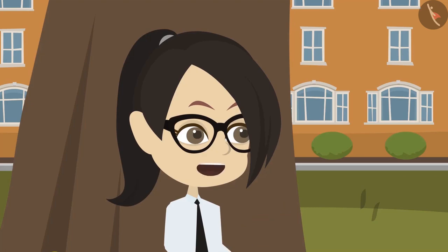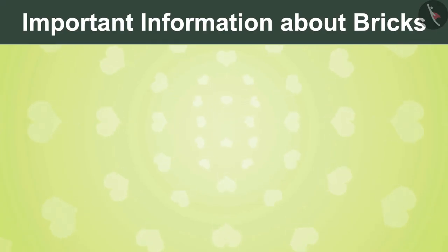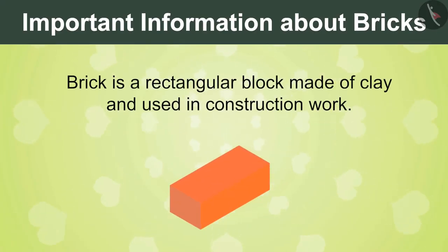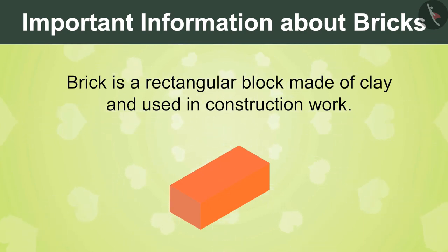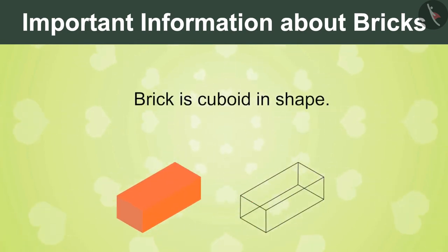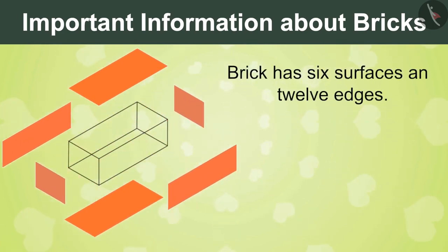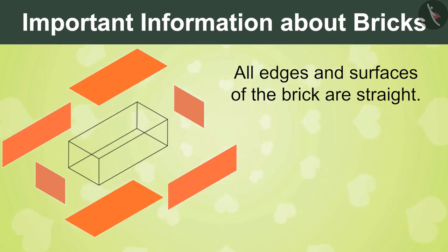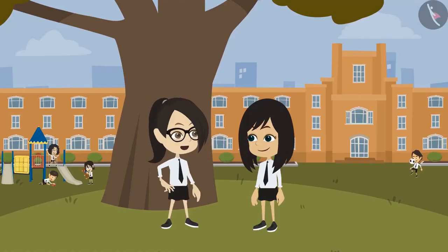I know all the information about bricks now. Bricks are made by baking clay and are used for construction work. A brick is in the shape of a cuboid, with 6 surfaces and 12 edges, and all the edges and surfaces of the brick are straight. But I think the real fun would be to make something with them.